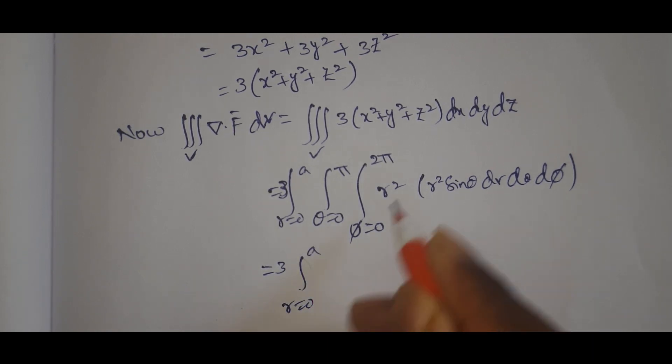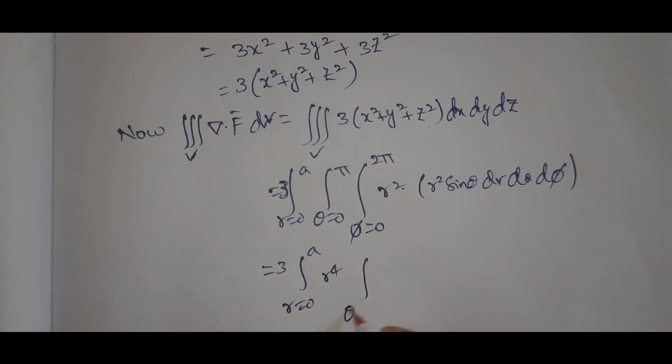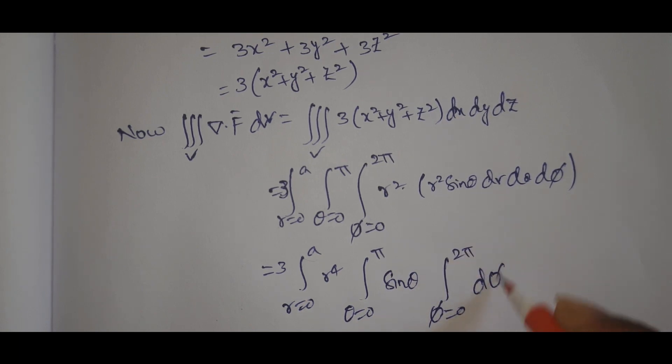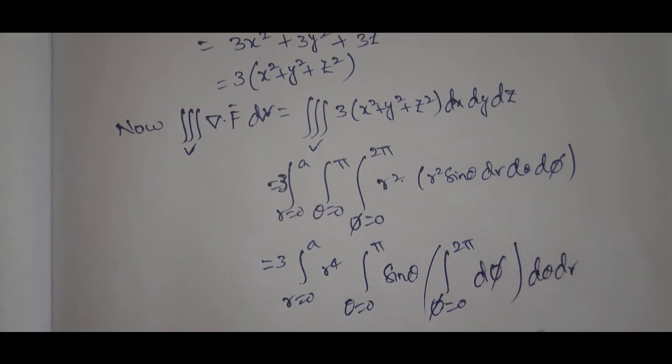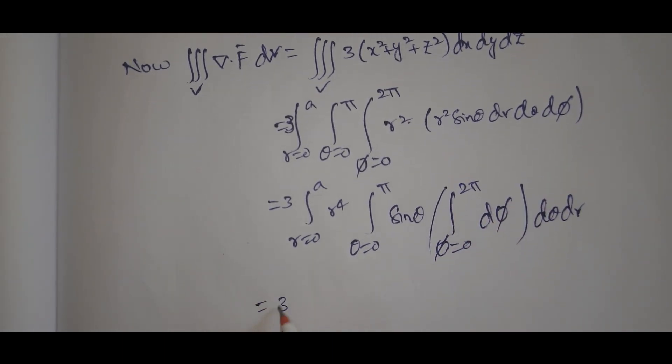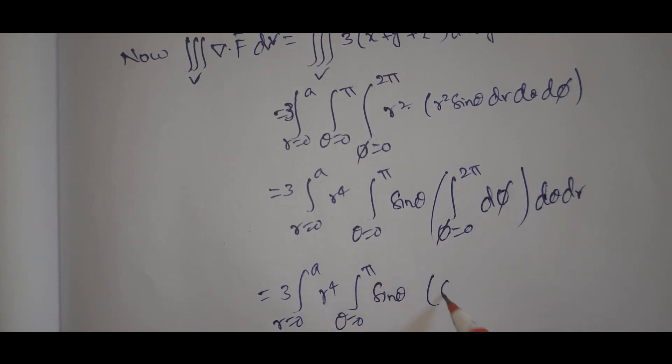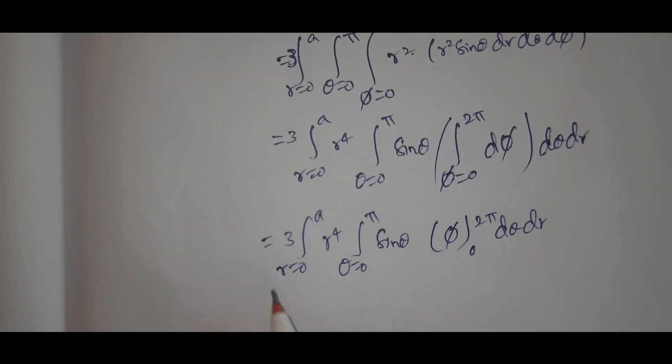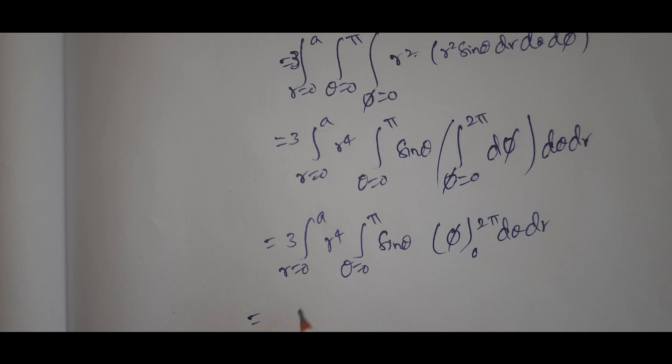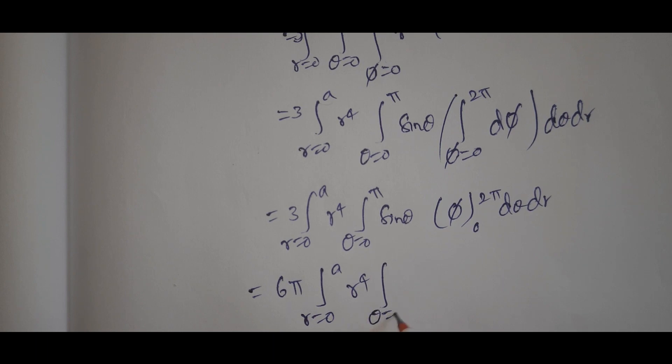integral r equals 0 to A of r squared times r squared equals r to the fourth, theta equals 0 to pi sine theta, phi equals 0 to 2pi, d phi d theta dr. That's 3 times integral r equals 0 to A r to the fourth, theta equals 0 to pi sine theta, and phi evaluated from 0 to 2pi gives 2pi.